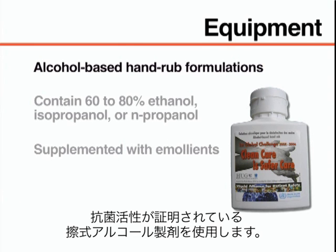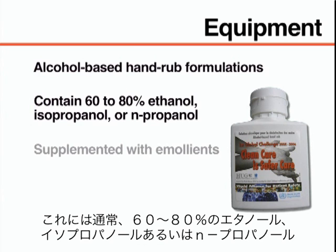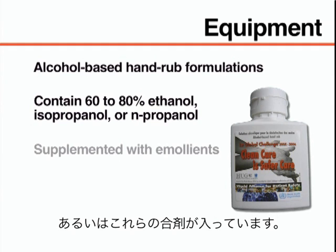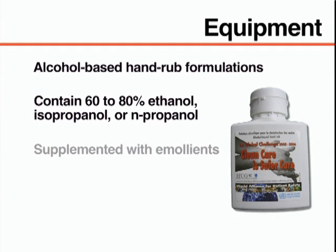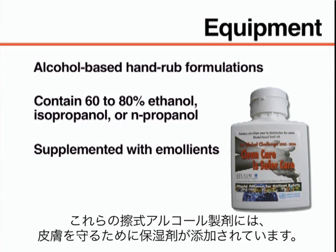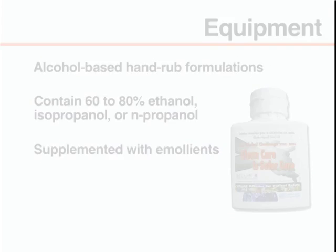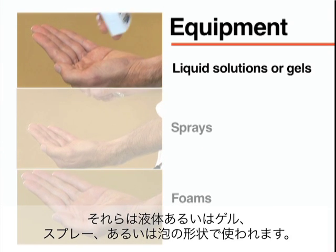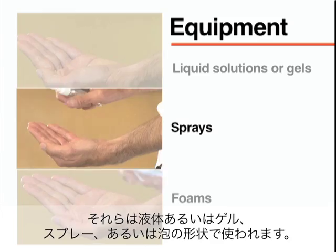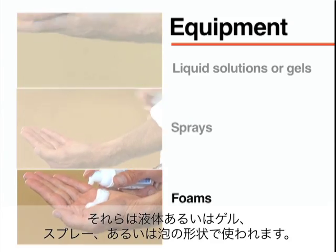Use alcohol-based hand rubs with proven antimicrobial efficacy. These usually contain 60–80% ethanol, isopropanol, or n-propanol, or a combination of these products. These hand rubs are supplemented with emollients to protect the skin. They are available as liquid solutions, gels, sprays, or foams.